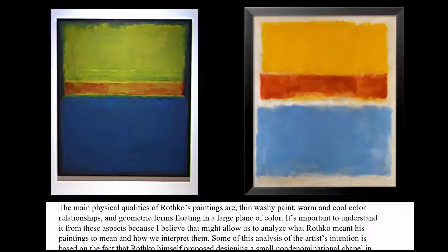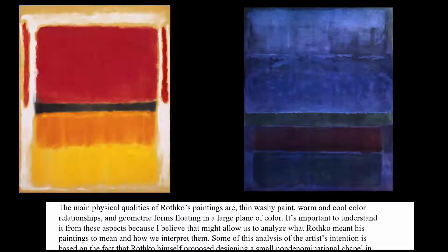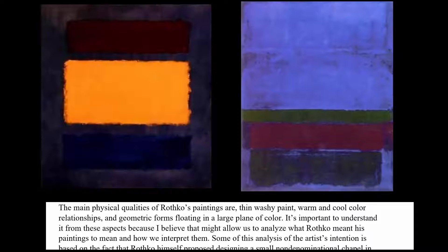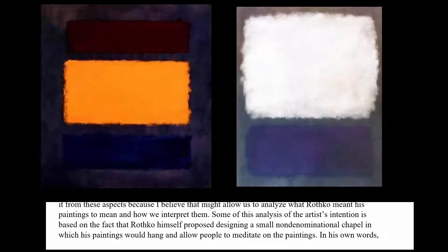That ties in with some of the ideas I want to bring forward. You need to reduce it down to several qualities: the paintings are thin and washy, Rothko uses warm and cool color relationships, and he has these geometric forms or rectangles floating in a large other plane of color. If you look at these aspects, you'll be able to interpret his paintings more along the lines of what historians have said.